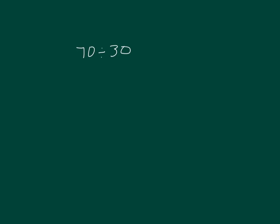Let's estimate our quotient. For our estimated quotient, we can go 60 divided by 30, because we know the fact that 6 divided by 3 is 2. 60 divided by 30 is the same as 6 divided by 3, which does equal 2. So our estimated quotient is 2.